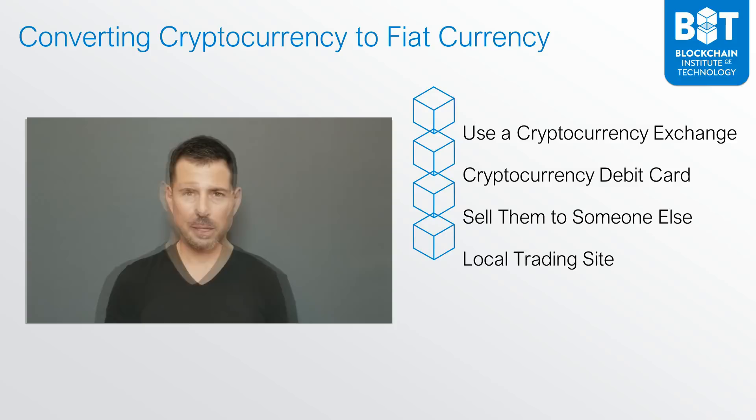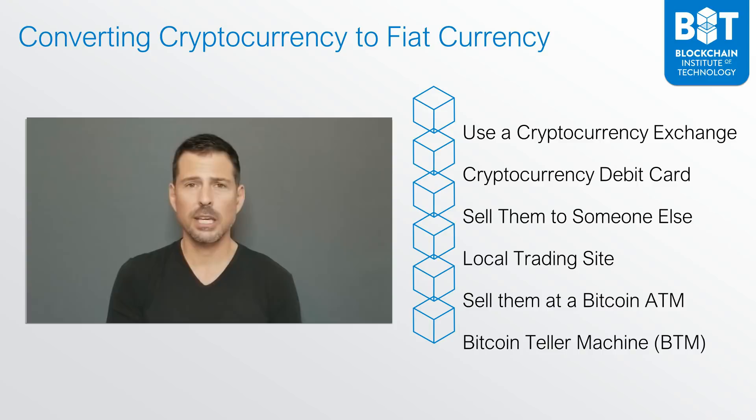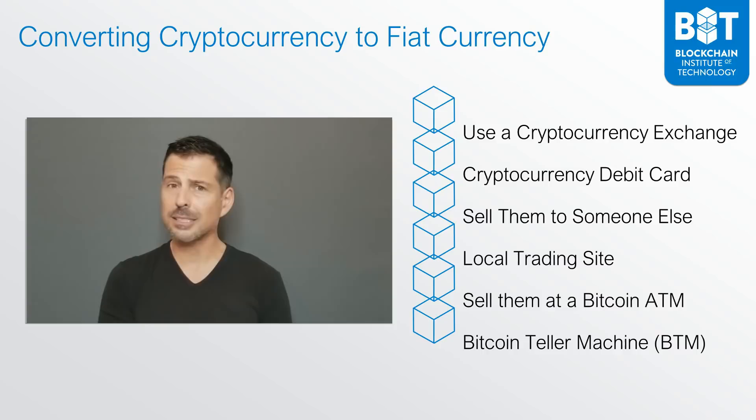Another option is to simply use a Bitcoin ATM. These Bitcoin ATMs are also called BTMs or Bitcoin Teller Machines. You go to one of these teller machines and you can buy Bitcoins from them, but you can also sell Bitcoins at many of them. It's a very easy transaction — you process the sale of your Bitcoins, transfer them using your own wallet into the teller machine, and the teller machine issues you local fiat currency.